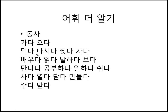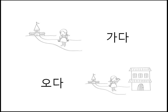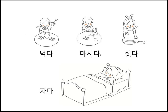가다 means go, 오다 means come. The 요-form of 가다 is 가요, and 오다 becomes 와요. 먹다 means eat, 마시다 means drink, 씻다 means wash, 자다 means sleep. Their 요-forms are: 먹어요, 마셔요, 씻어요, 자요.